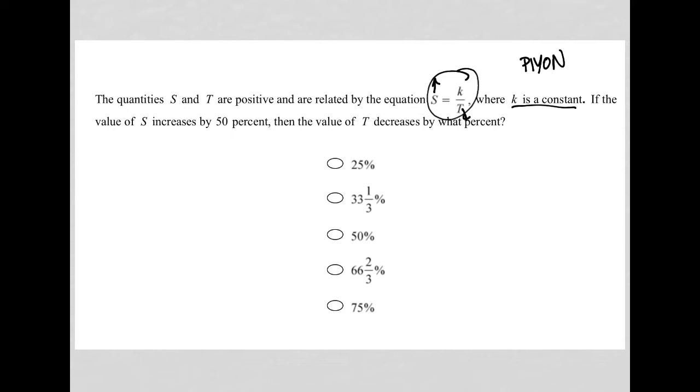It needs to make sense, obviously. And then I'll say, well, what happens to that when I change it by increasing S by 50%? So I am going to say that K is equal to 8, that T is equal to 2. And by doing that, that makes S equal to 4.